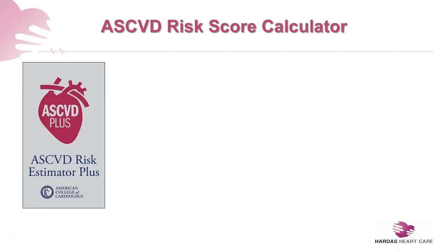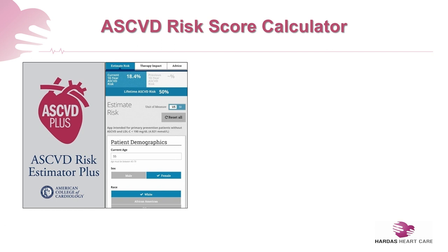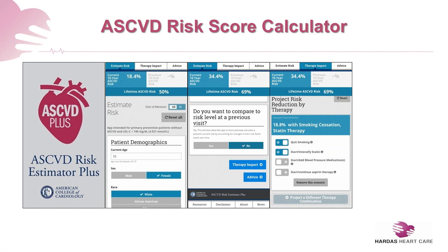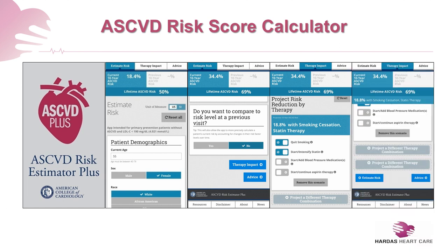When you open it on your cell phone, the home screen will ask you certain features about yourself, including your age, gender, race, systolic blood pressure — if you don't know it, get it checked by your doctor — your cholesterol levels, and your smoking status. It will then tell you your 10-year risk of having a cardiovascular problem and your lifetime risk of ASCVD. If you have used the app before, it will compare your previous risk with today's, and lastly, it will suggest things to improve your risk score.